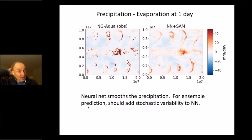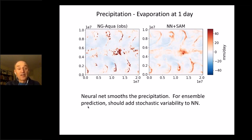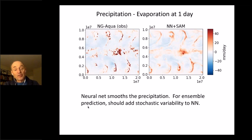After one day, looking at precipitation minus evaporation, you can see on the left the original simulation and on the right the coarse-grain simulation with our neural net as the moist physics parameterization — they match very well in terms of where the precipitation is, the red and blue spots are the same. However, the original data set has a lot more small-scale variability which the neural net smooths out, so for ensemble prediction it would be nice to put back that small-scale variability, which would require a stochastic version of this neural net parameterization.